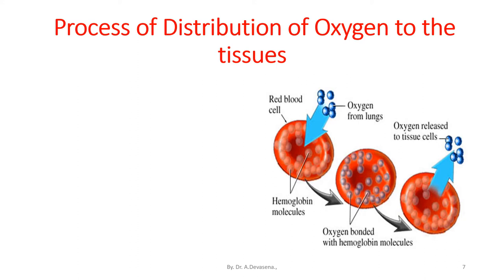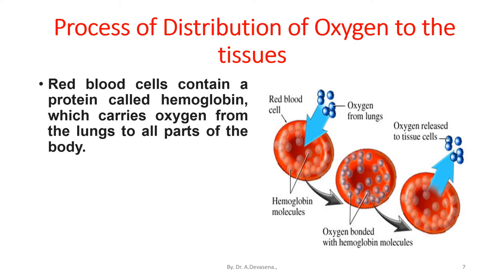The oxygen that is present from the lungs is transferred to the red blood cell. Already in the red blood cell, we have hemoglobin molecules. This red blood cell contains a protein called hemoglobin. This hemoglobin carries oxygen from the lungs to all parts of the body. The oxygen combined with the hemoglobin creates a bond. This oxygen bonded with the hemoglobin molecules is passed to the tissues through the blood vessel, and in the tissue the oxygen is released.